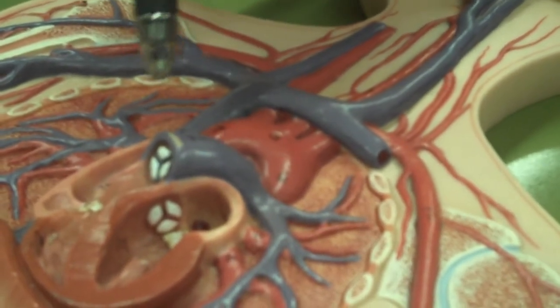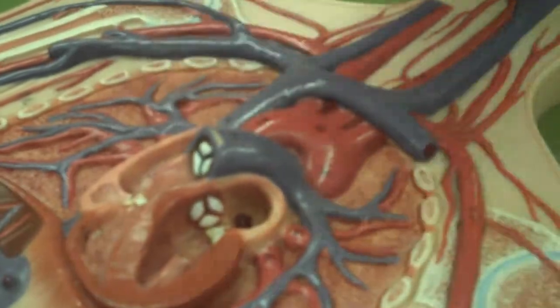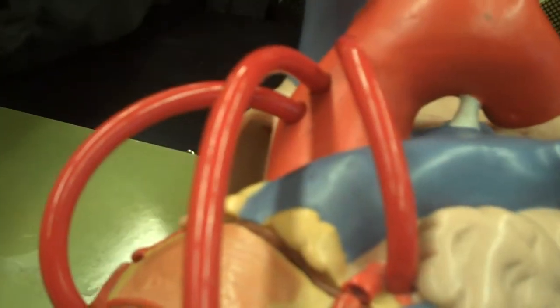The ascending aorta is the part of the aorta where it's coming up. And the descending aorta is where it's going down.